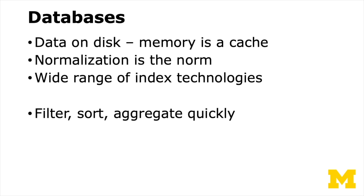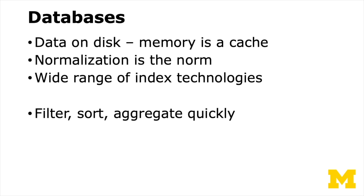So you can have a 20 terabyte database on a really small computer. We are naturally compressing data through normalization — we call them lookup tables in databases. There's a wide range of wonderful index technologies: hashing, B-trees, inverted indexes, and so on. Things like filtering, aggregating, and sorting quickly — that's what databases are designed to do. You really don't want to write an out-of-memory sort yourself, whereas a database just does that without even trying. It's a beautiful thing.